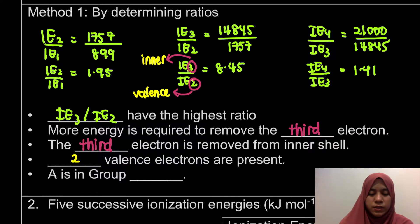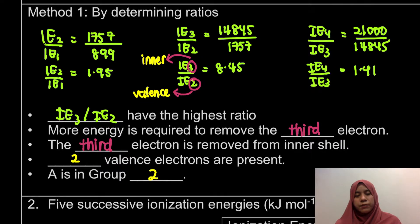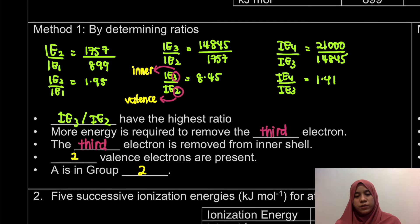Since we have 2 valence electrons, atom A is actually in group 2. That's the ratio method.